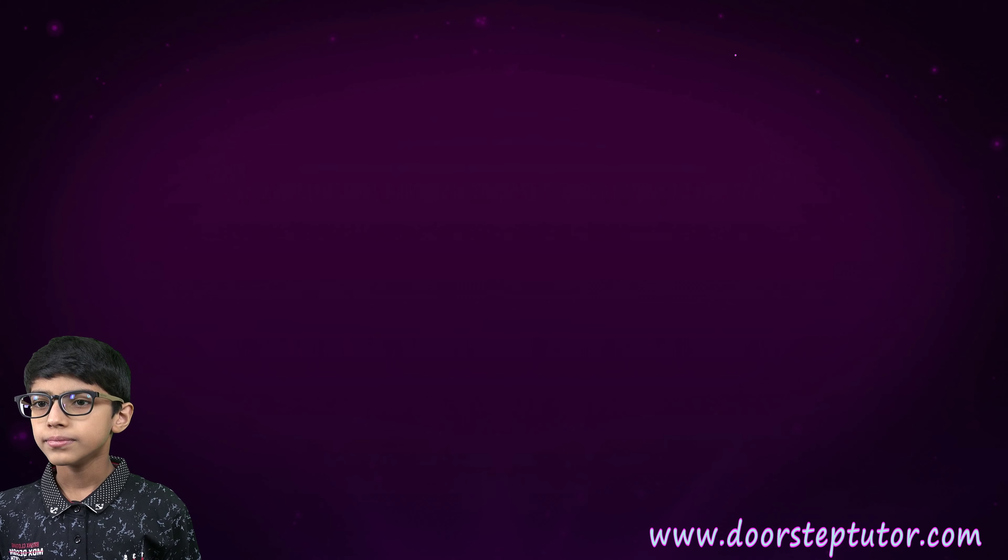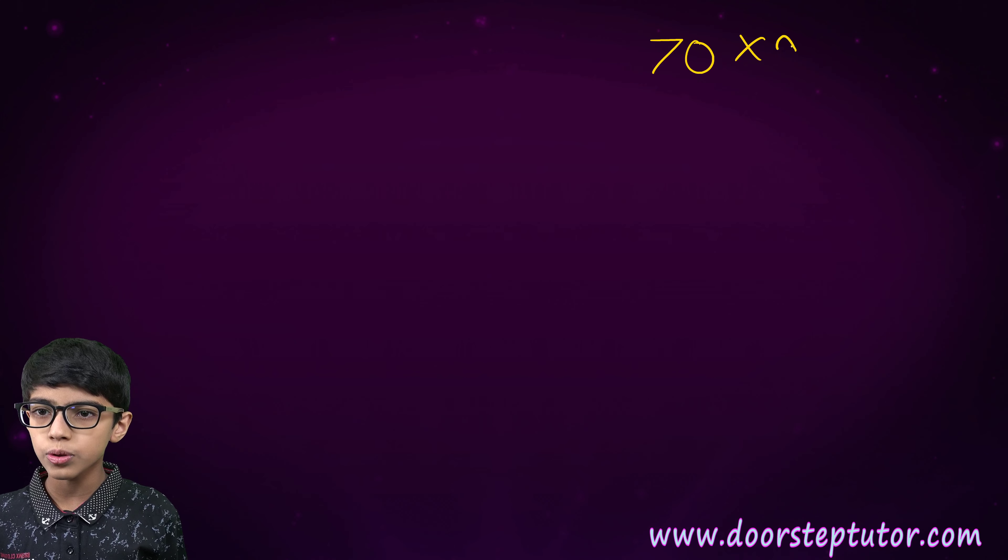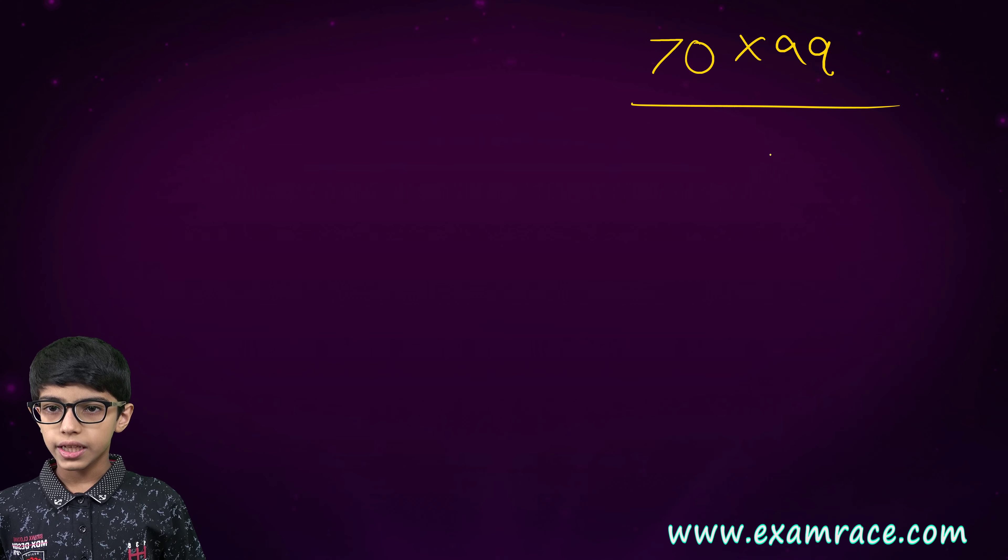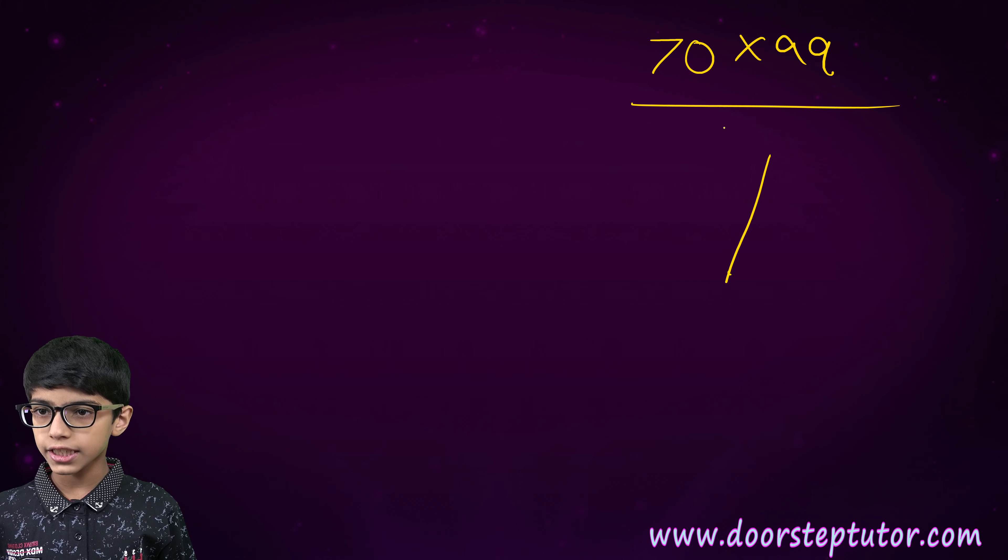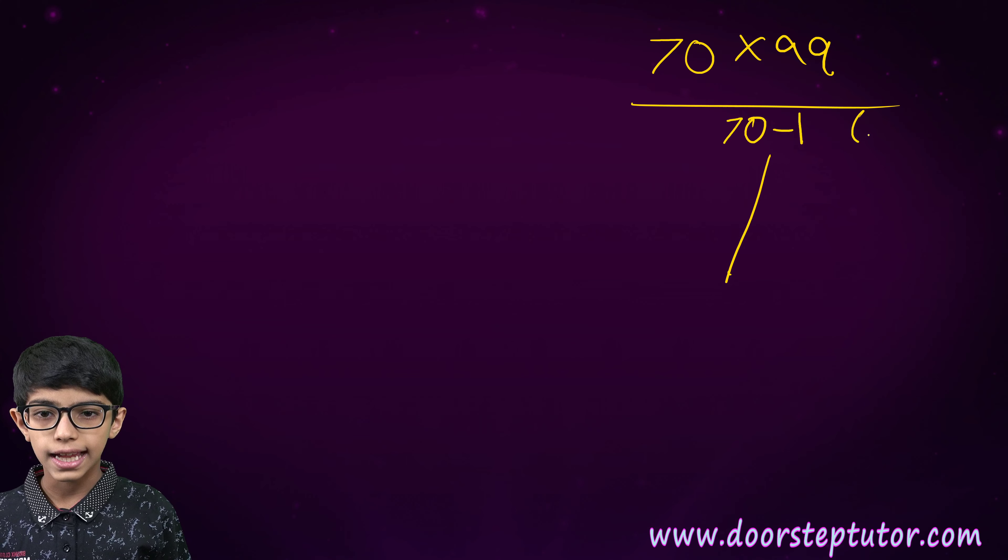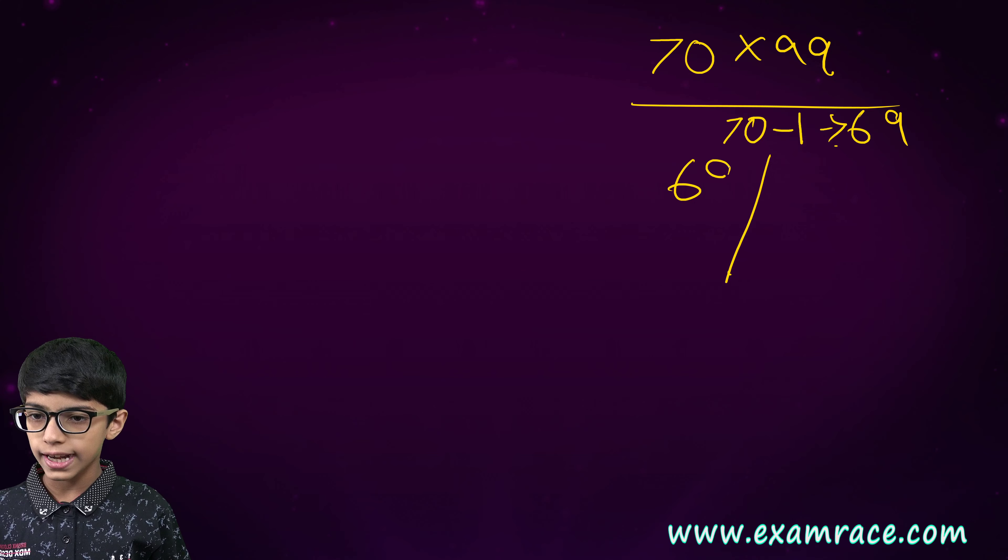Now, the next is 70 into 99. We will divide our answer in two parts. Then, 70 minus 1. That is 69. Now, here we will write 69.